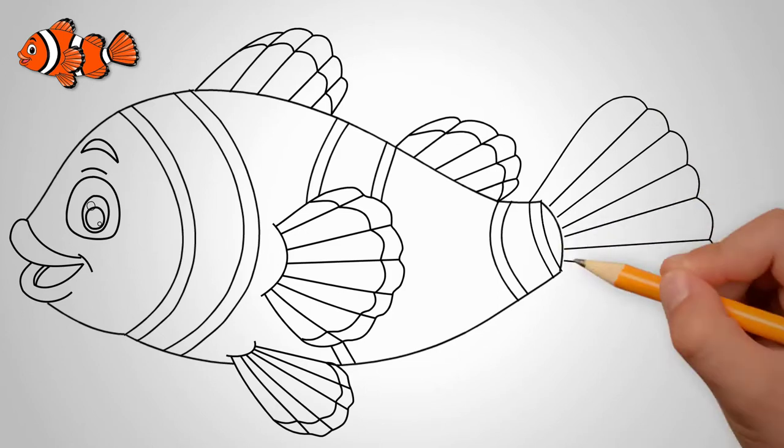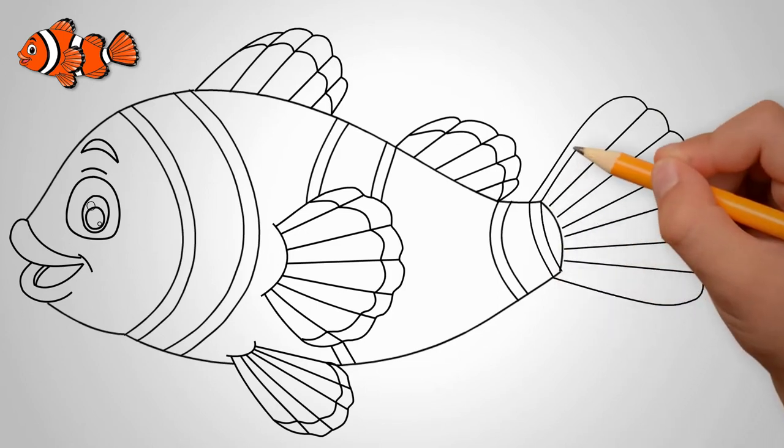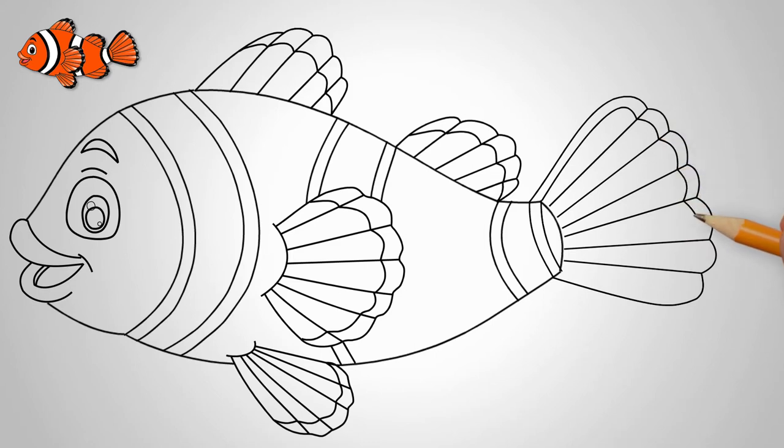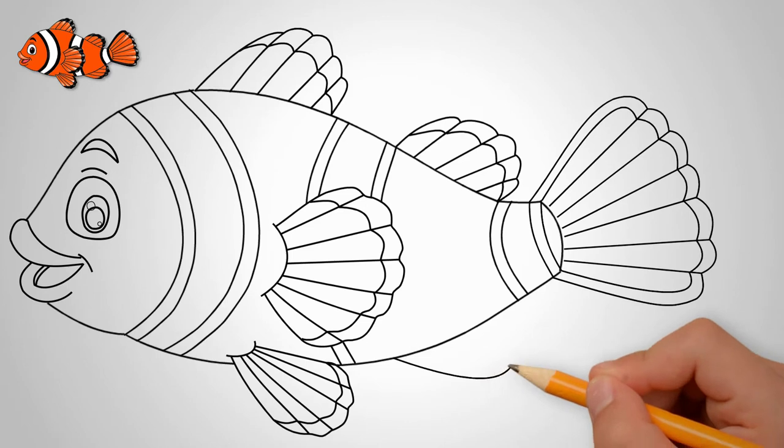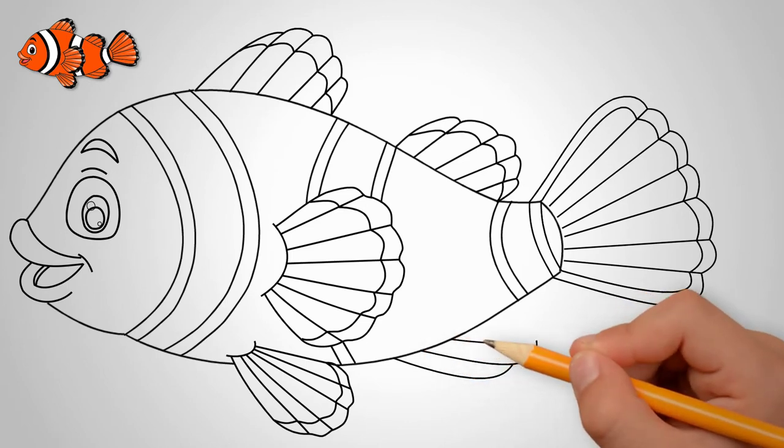A little closer to the tail draw another, slightly smaller fin. And now let's draw the tail of a clownfish. It is large and semicircular. Here the rays placed in a semicircle are well visible.